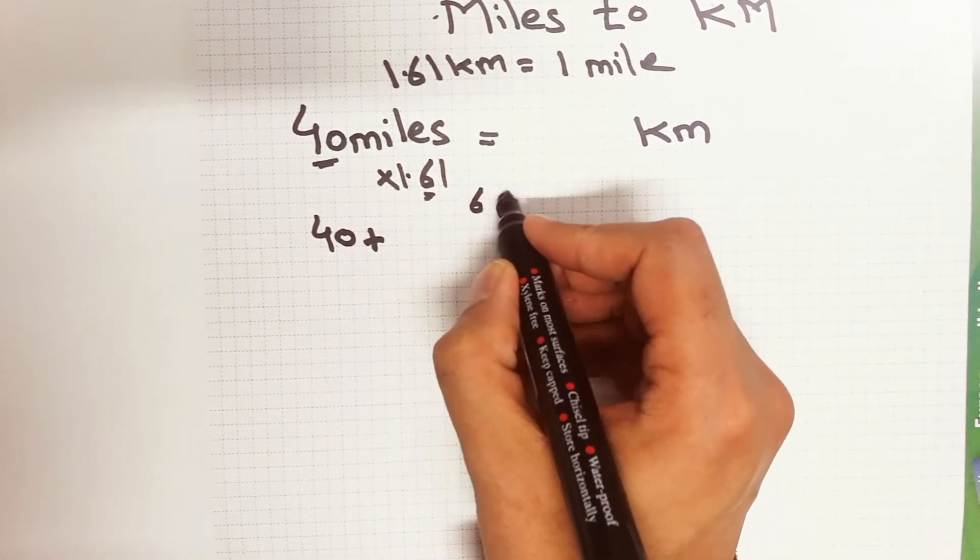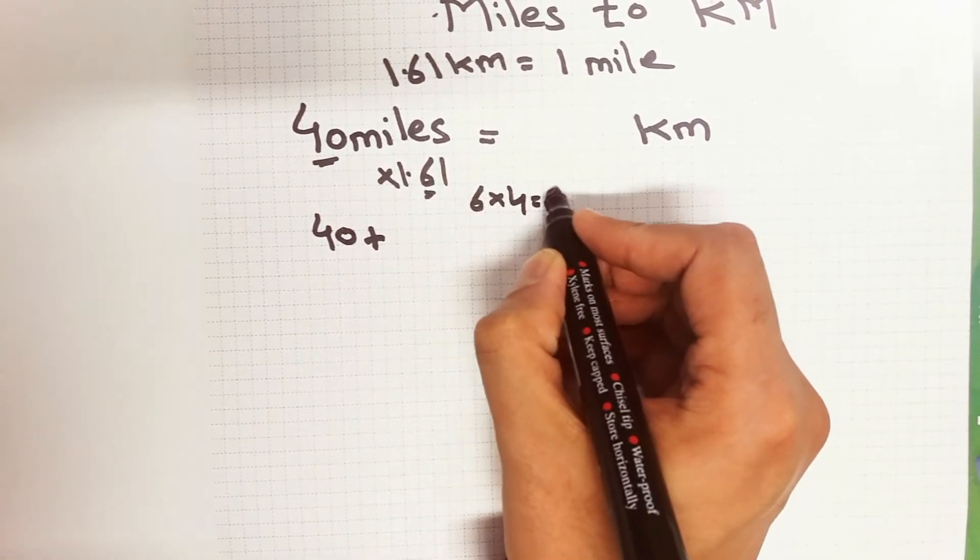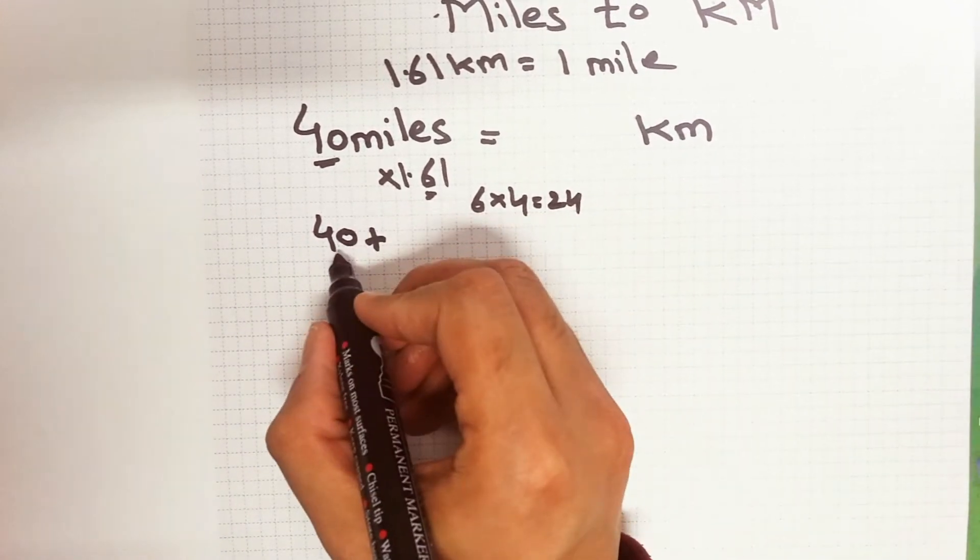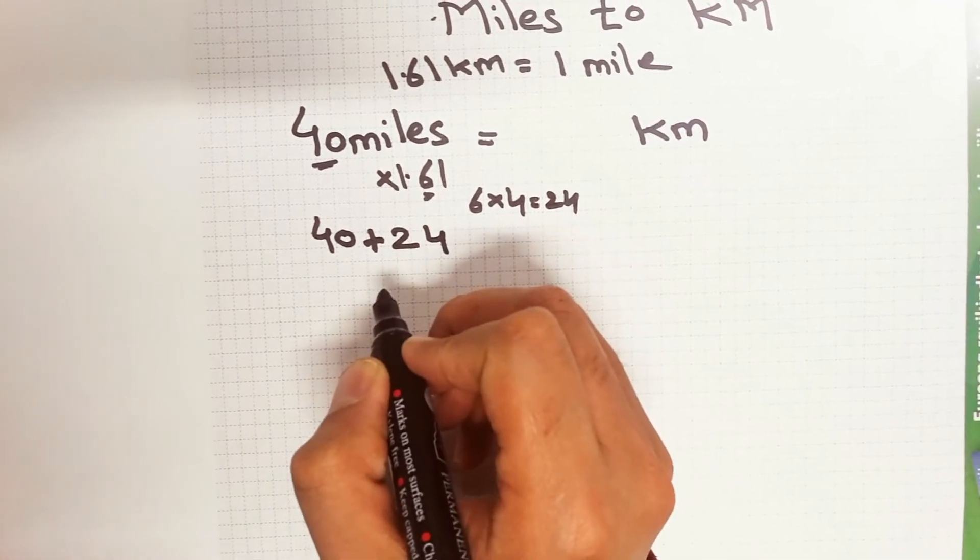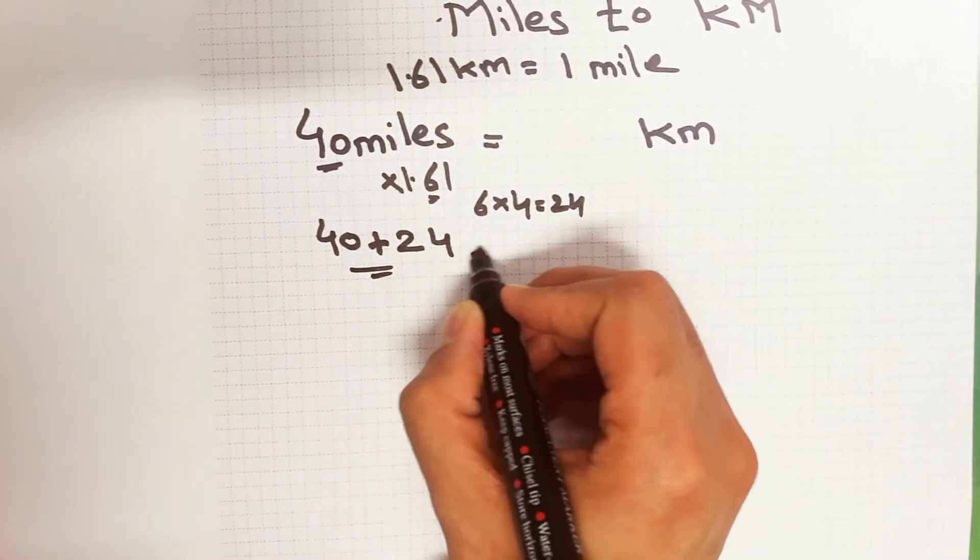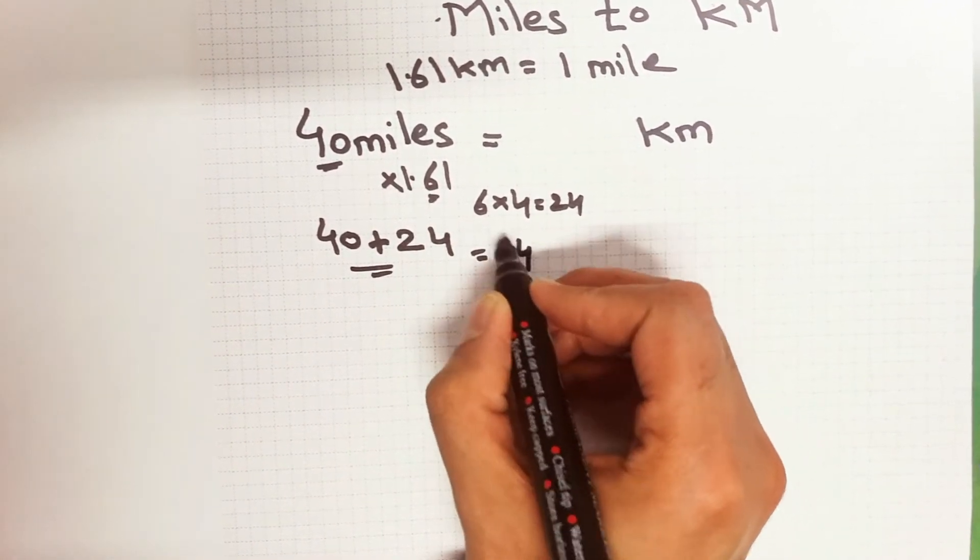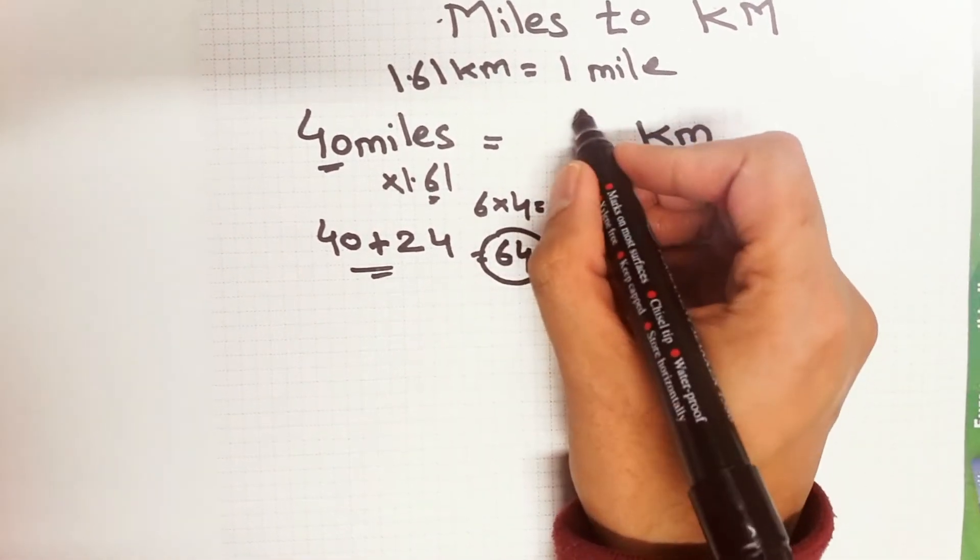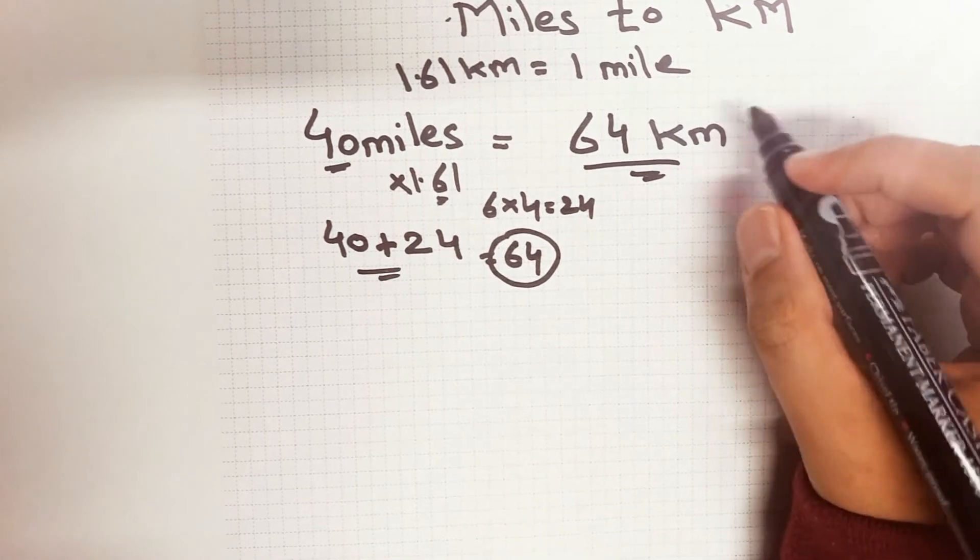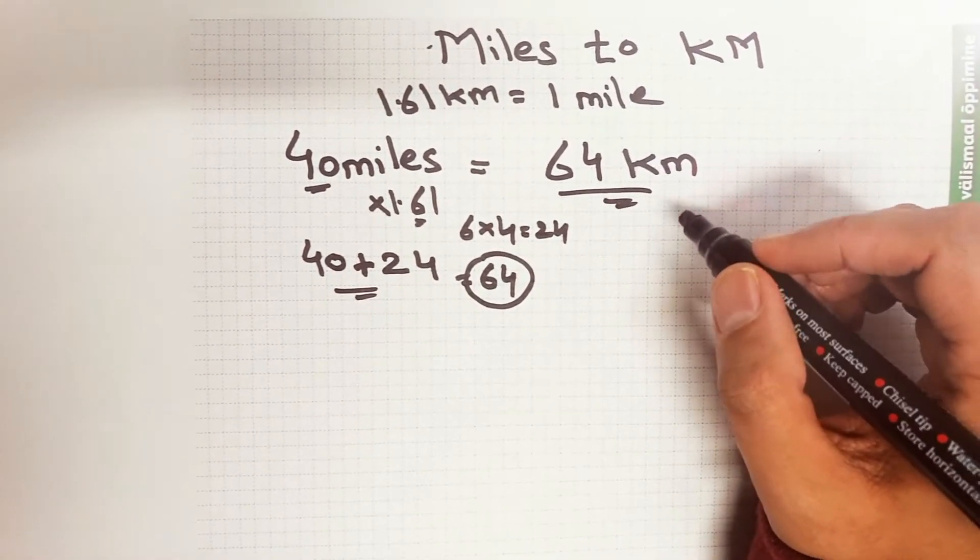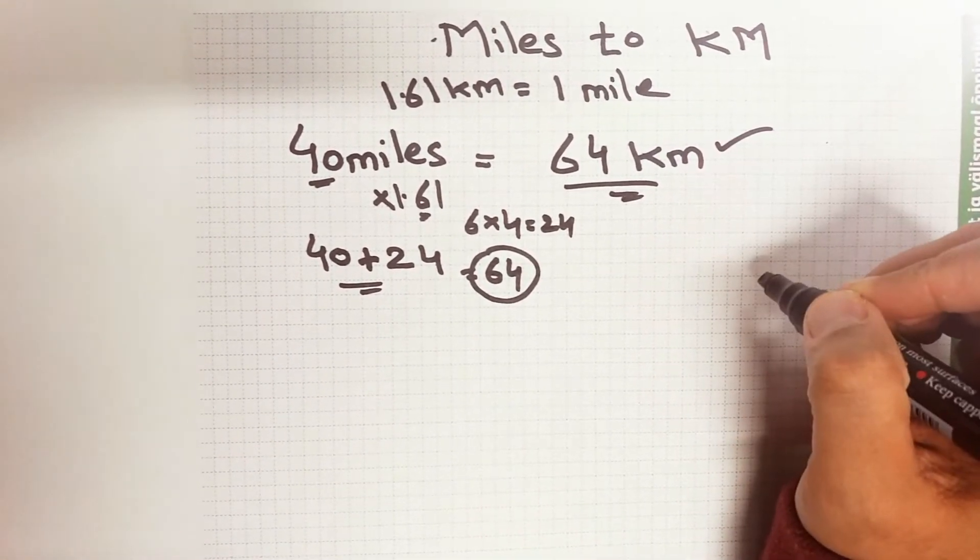So 40 and then this is the answer 24. So 40 plus 24 will be equal to total 64. So guys, this is 64 kilometers as the answer. The answer is 99% correct.